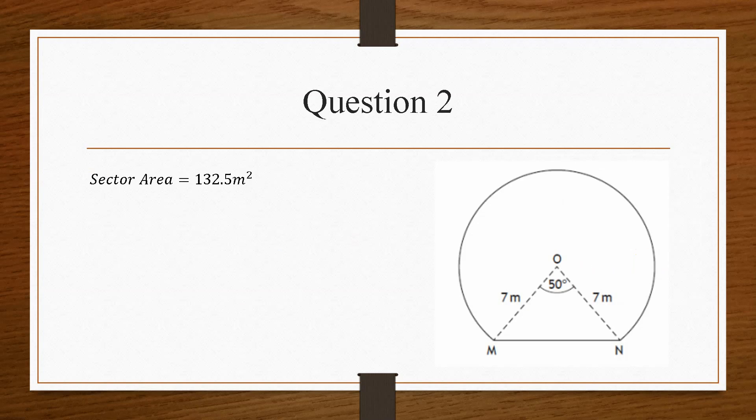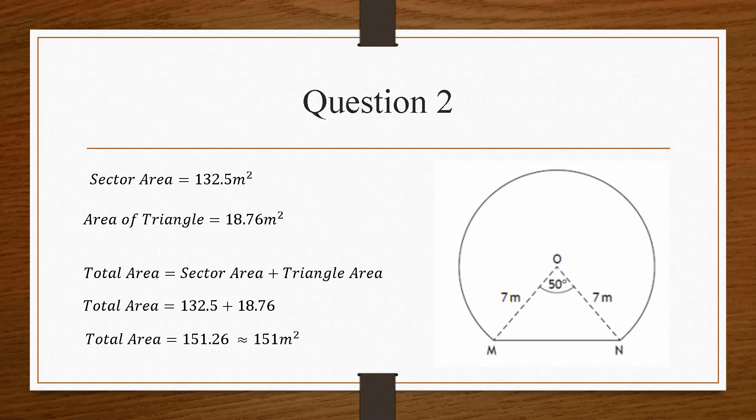So the final step in this question is it wants the total area. So our sector area and our area of the triangle, if we get the total, we simply just add the two of them together, and we get a total area of 151 meters squared. So a fairly substantial problem-solving question, one that combines two topics. I think this was worth about five marks in the exam, so it's one to really know how to do.